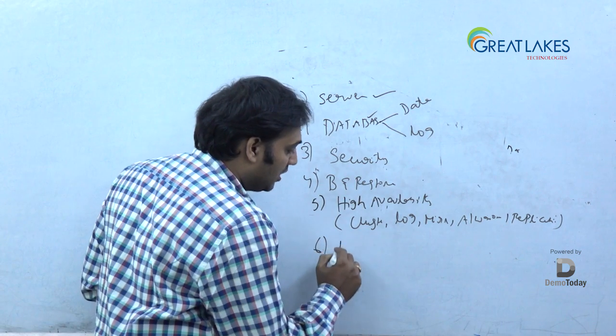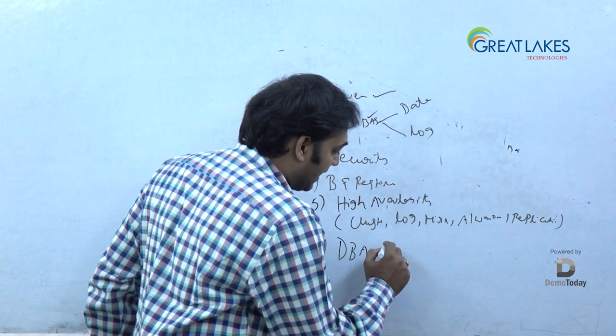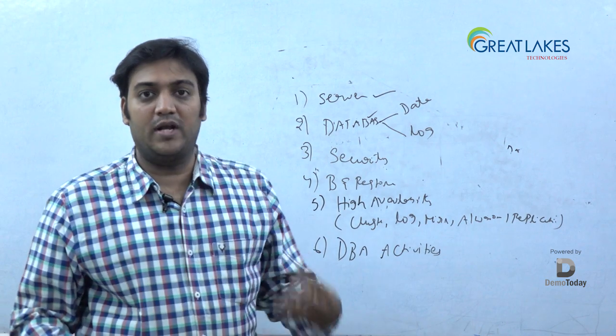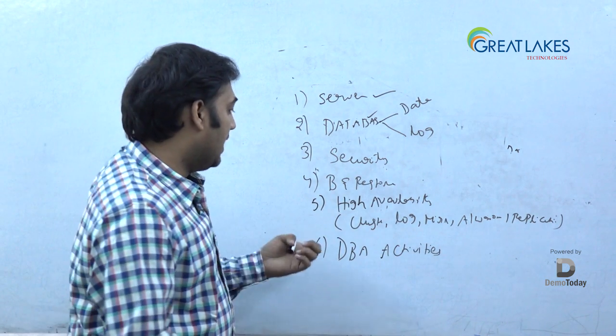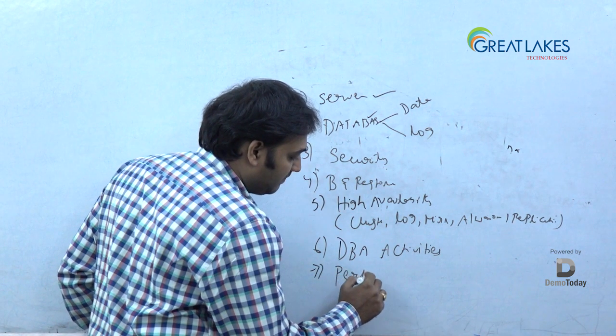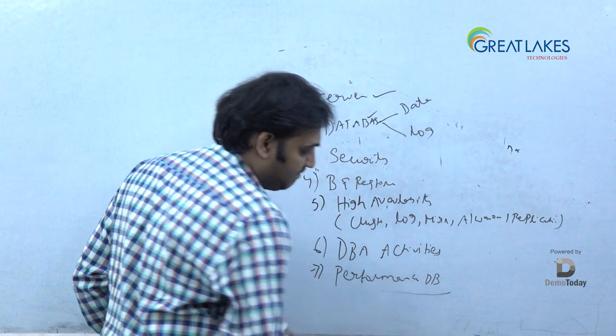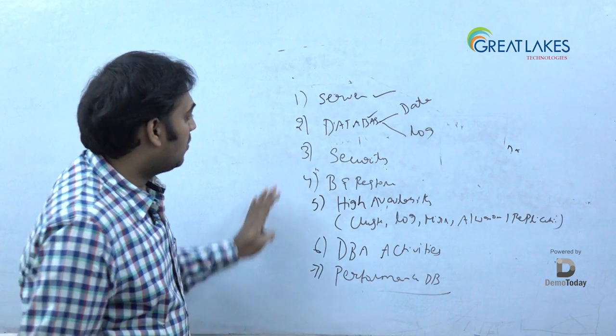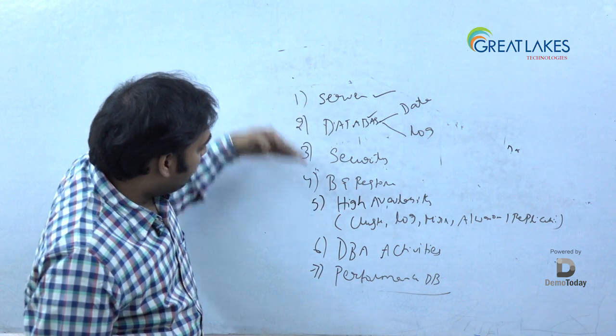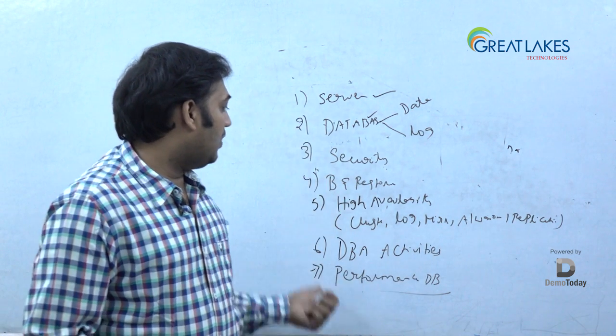And sixth, we talk about what are the different DBA tasks. When you go into a company as a DBA, what are the different activities you will be learning? What are the different activities you will be getting? How do you do a day-to-day work of a DBA? That's what I will teach you here. And seventh most important thing is nothing but performance tuning. How do you tune a database? We cover all these topics. This is at a high level, but we will go into depth for each topic. And this course will be taking around thirty days, thirty to forty days to complete all these topics.